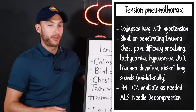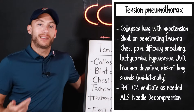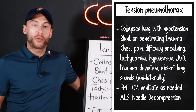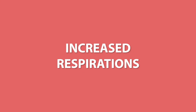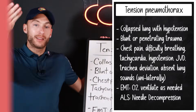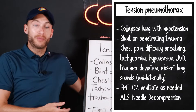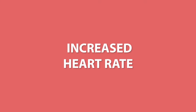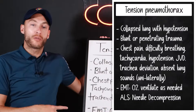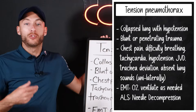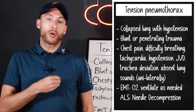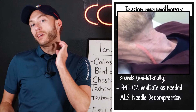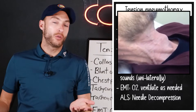The main signs and symptoms of tension pneumothorax are going to be severe chest pain, difficulty breathing, and increased respirations. With that difficulty breathing, we're also going to have an increase in heart rate. You also want to look out for hypoxia — your SpO2 is going to be low — and JVD. Anytime the heart fails as a pump, we get JVD in the neck, on either side.